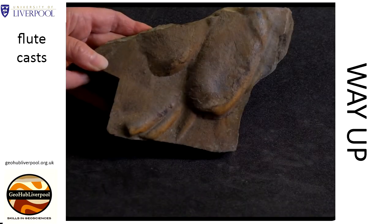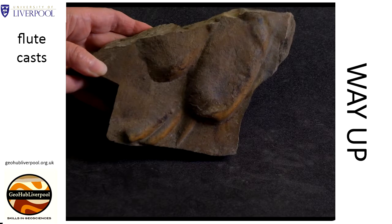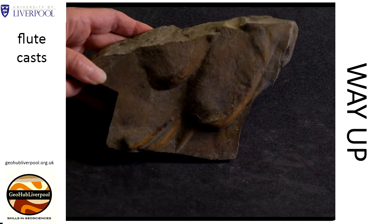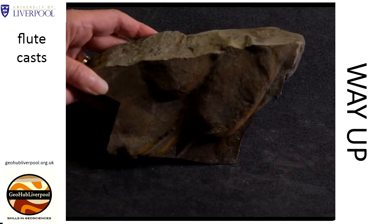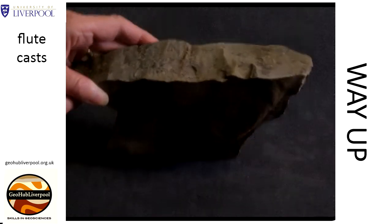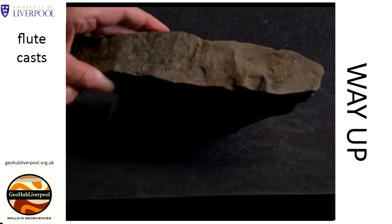By tilting the rock, you can see the correct way up of the layer. The flute, or scoured hollow, was formed at the base of the bed, and the flute cast was formed by the sediment filling the hollow.